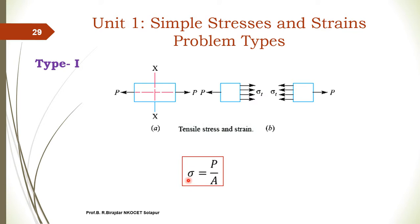Stress equals force divided by the cross-sectional area which is resisting the deformation. So here, the deformation occurs at that resisting area. This is the very basic first type.